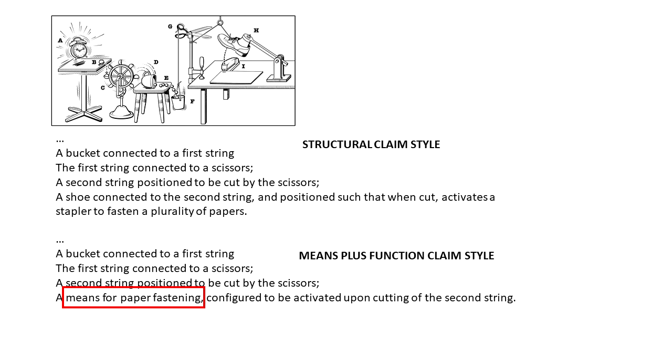So at first glance, the bottom version seems like a much broader claim. It looks like it could provide better coverage because it is not mentioning specific items like shoes and staplers. Recall that to infringe a claim, the infringing thing must have all the elements of the claim. So if the competitor device doesn't have a shoe, it won't infringe our claim. So our bottom claim version doesn't mention the shoe. So that claim seems like it could cover more than the structural style claim. But is that really the case?